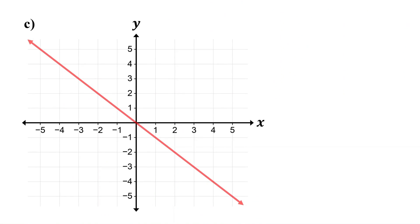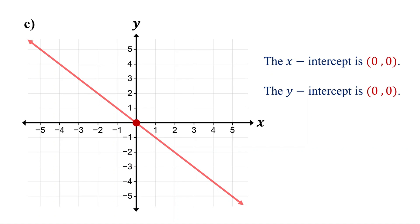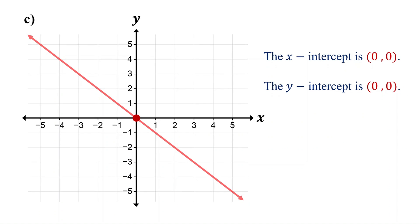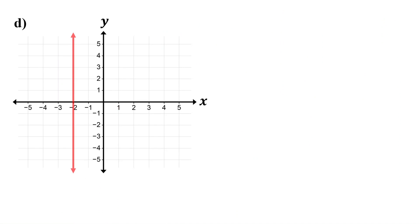In this case, the line crosses both the x- and y-axis at the origin. So, both the x- and y-intercepts are the point (0, 0). What if the line is vertical?